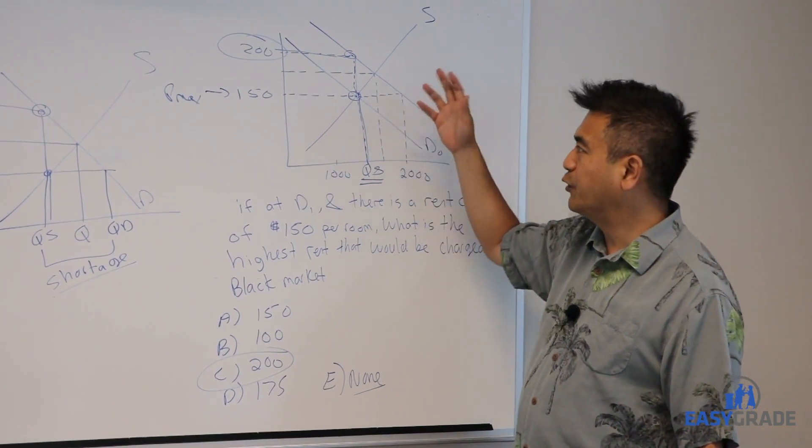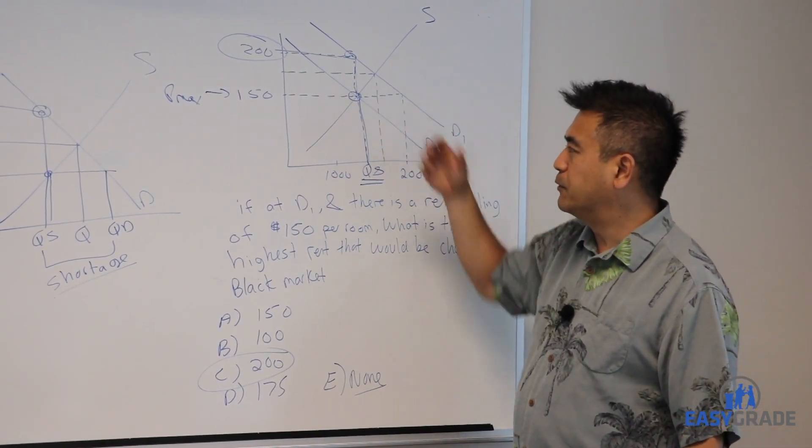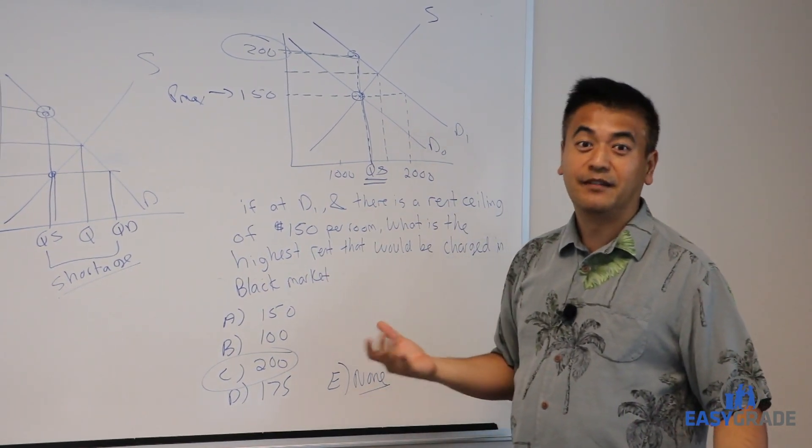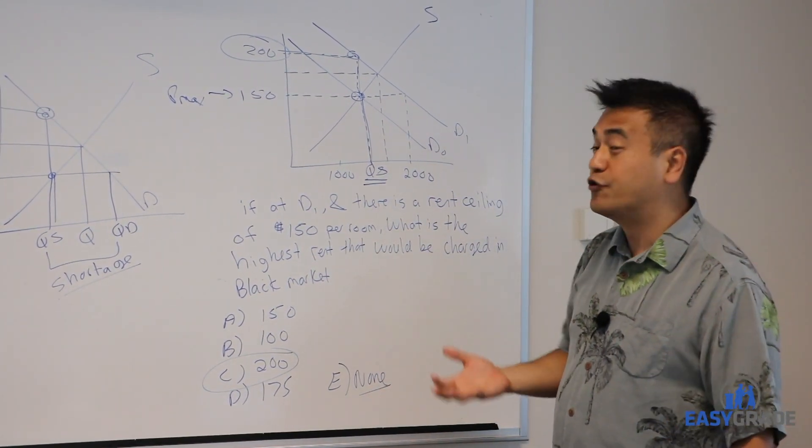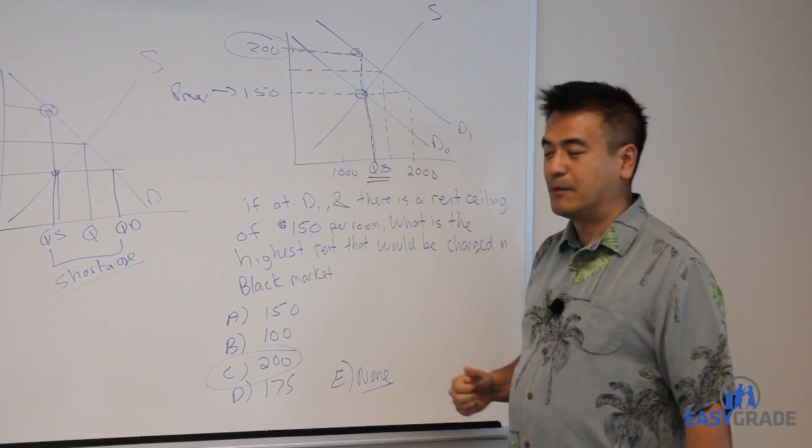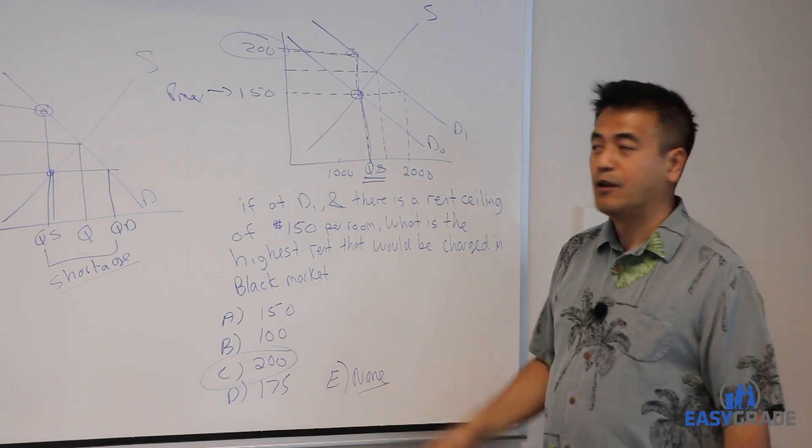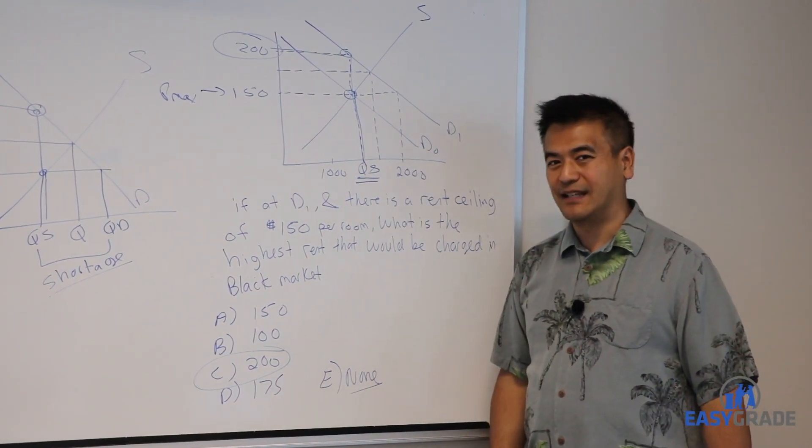And that's why in the real world, you see the people who sell things in the black market are making lots of money. Scalpers is one example. Drug dealers is another example. This is economics. And that's how you can see the idea of black markets caused by price ceilings.